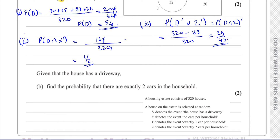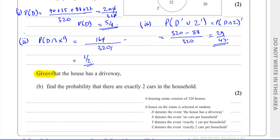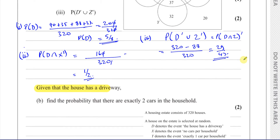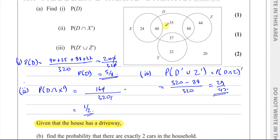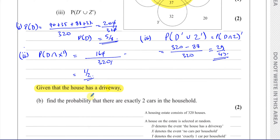Now this phrase 'given that' is a very, very important phrase. What that means is: given that the house has a driveway, we are now limiting our sample space to just the circle D. So we're only looking at circle D — this is our whole sample space. So now our denominator is no longer 320; our denominator is now what is in D, which is 200.